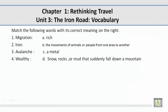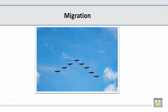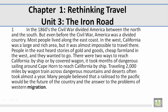Match the following words with its correct meaning on the right. Number 1: Migration. Muhammad, please give us the correct meaning on the right. In this picture I see a group of birds flying, and that's their movement, and what migration means: movements of people or animals from one place to another. Let's take a look at the paragraph containing the vocabulary word migration. In the last sentence it reads: 'Many people believe that a railroad to the Pacific would be the future of the country and the answer to the problems of Western migration.'